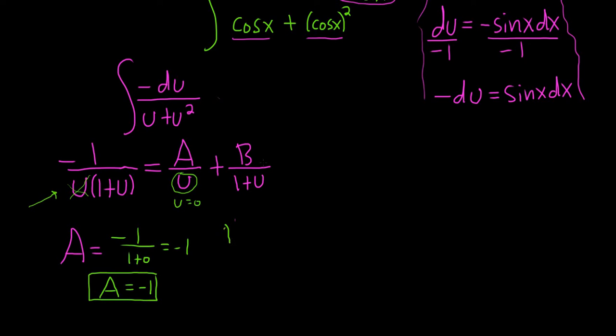To find b, the same thing. You look at what is under b. So 1 plus u. And you ask yourself, what makes that 0? Well, u equals negative 1 makes it 0. Then you come over here, and you cover it up, and you plug in negative 1 everywhere else.